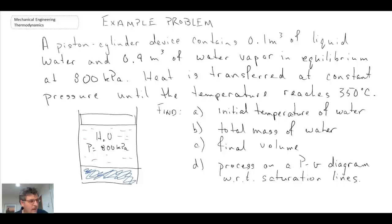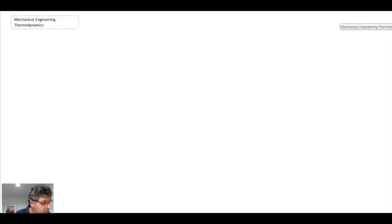When you have a problem like this, the best thing to do is begin by writing out the information that you know. So we know that we have a piston cylinder device. The volume of the liquid is 0.1 meters cubed and the volume of the gas phase or vapor phase is 0.9 meters cubed.